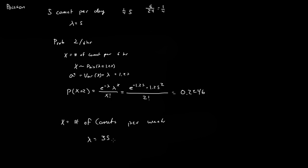You would expect, on average, the expected value of x for a week to be 35 comets. And again, the variance of this, if it's a true Poisson distribution, is equal to lambda, which equals 35.